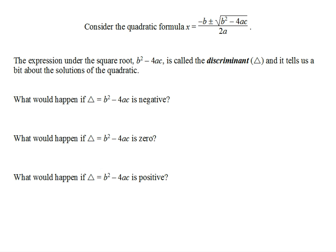The discriminant is related to the quadratic formula. The discriminant is the expression under the square root — b squared minus 4ac. If you watched the previous video on the quadratic formula, you'll have seen in the last two examples we had interesting things going on under the square root which dictated the number of solutions that we were going to get.